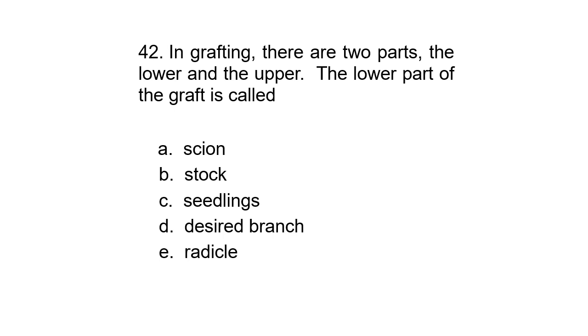Question 42. In grafting, there are two parts, the lower and the upper. The lower part of the graft is called: A. Scion, B. Stock, C. Siblings, D. Desired branch, or E. Radical. Correct answer is stock.